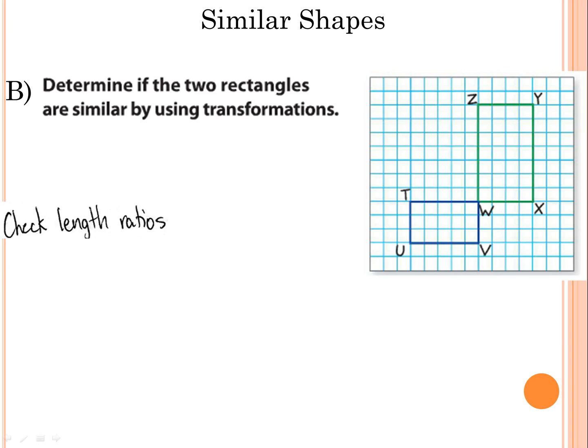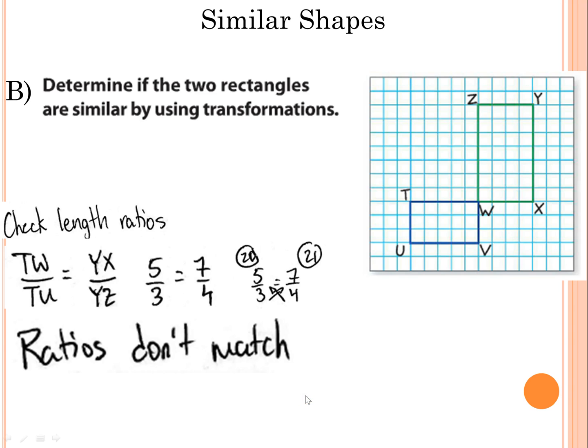So we're going to check the length ratios, so TW over TU, so the long side over the short side, YX, which is the long side over the short side, YZ. So we count the boxes, and it's 5 thirds equals 7 fourths, so I'm going to multiply, and these are not the same numbers. 4 times 5 gives me 20, and 3 times 7 gives me 21. I don't have to do anything else, because I know that the ratios don't match, and that means that they are not similar. So they are not similar, because the ratios don't match.